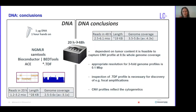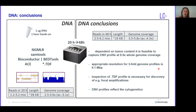To conclude the DNA part: currently we increased the time of sequencing up to 48 hours and now achieve four-fold coverage on average, with some flow cells achieving almost six-fold genome coverage. Depending on tumor content, it is feasible to capture a copy number profile at 0.5-fold genome coverage. The appropriate resolution for three-fold genome coverage is 0.1 MB. Inspection of the TDF profile is also necessary for discovery of focal amplifications, and copy number variation profiles reflect the cytogenetics.